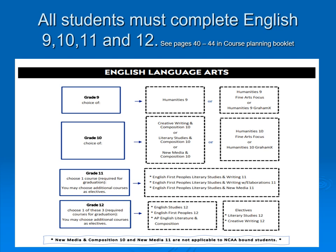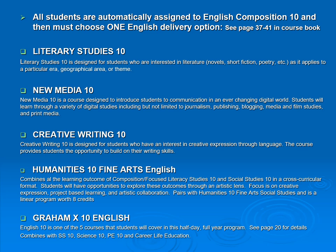All students must complete English 9, 10, 11, and 12. At the grade 10 level, you have several different options available to you. English 10 is a graduation required course and all students are automatically assigned to a two-credit English composition course. In addition, students can choose between literary studies, new media, or creative writing. Additionally, there's humanities and fine arts. There is also Grad X English — and all of these are ways that students can get their English requirement completed.